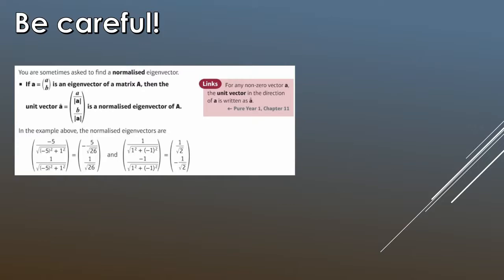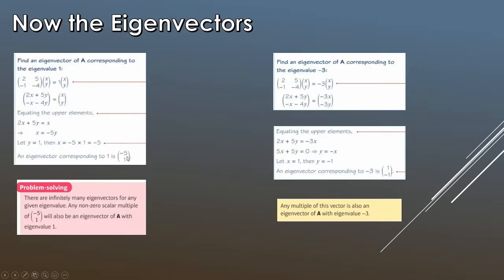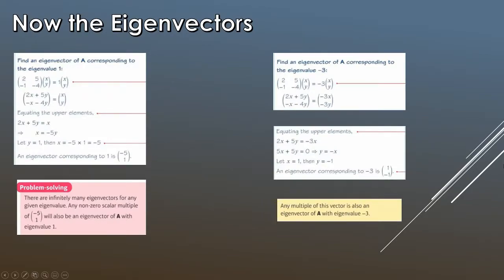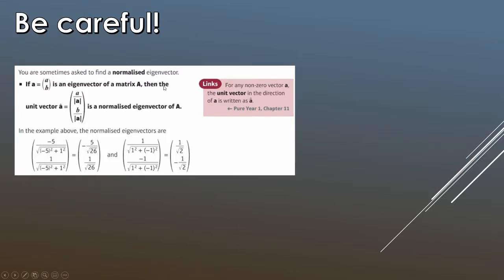Be careful — you might be asked to find a normalized eigenvector. If the eigenvector is (a, b), the normalized (unit) eigenvector is that vector divided by its magnitude. For our example, for eigenvalue 1 the eigenvector is (−5, 1), so you compute √((-5)² + 1²) as the magnitude. For eigenvalue −3 the eigenvector is (1, −1). Read the question carefully, and if it asks for a normalized eigenvector, make sure you divide by the magnitude.